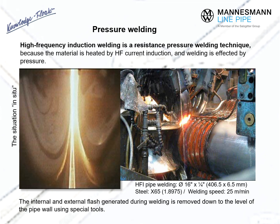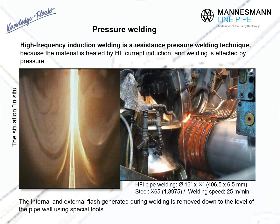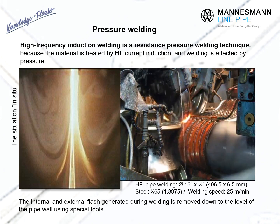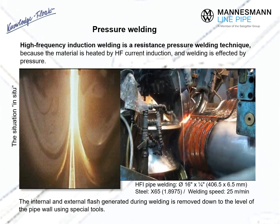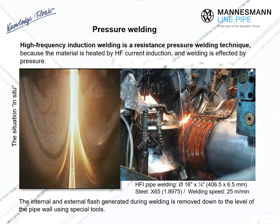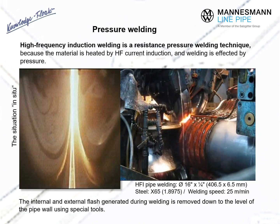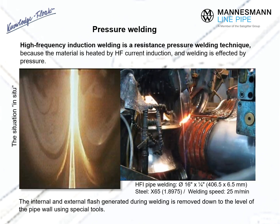The video shows the production of high strength steel pipe by HFI welding at a speed of 25 meters per minute. The flash generated on the inside and outside surfaces during welding is scraped off with special tools.